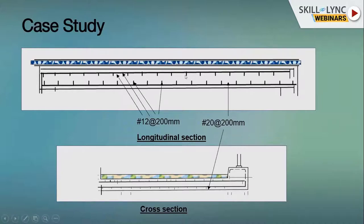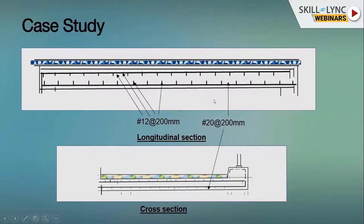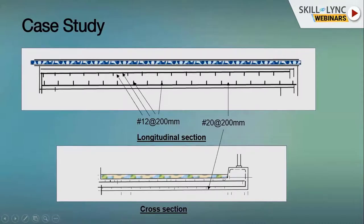The top portion is the distribution steel. The code specifies that a minimum percentage of steel must be given as distribution steel for each slab bridge, whether it is a requirement or not. Shear reinforcement is not visible in this view because it is not required for this particular bridge — slabs generally don't require shear reinforcement, although there are cases where it may be provided.